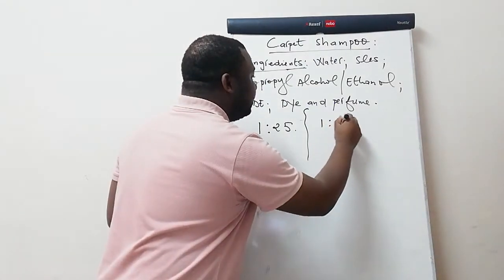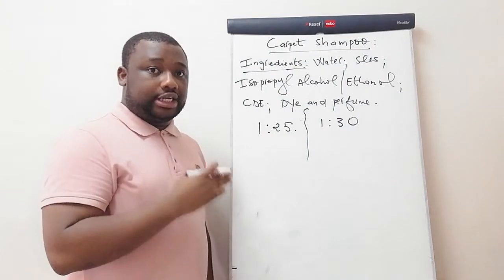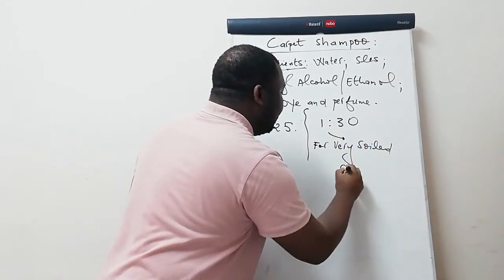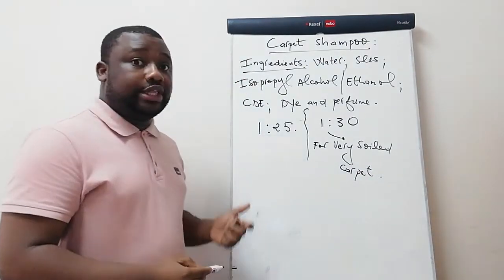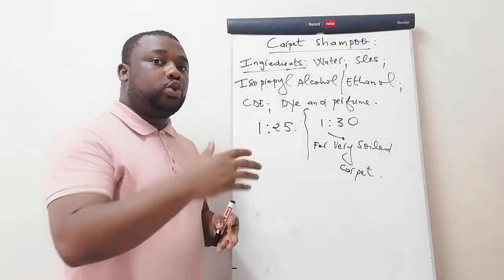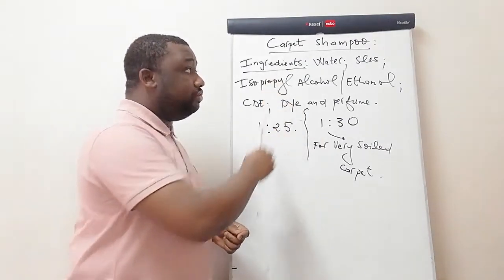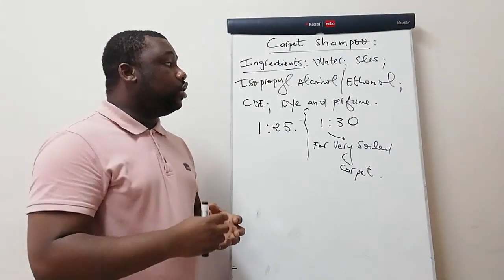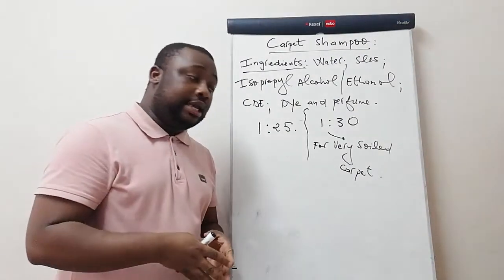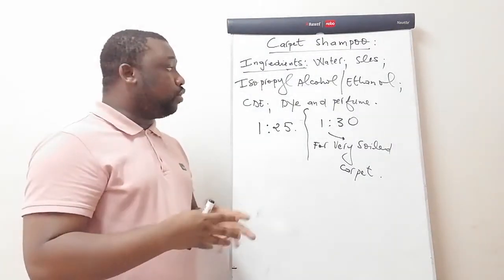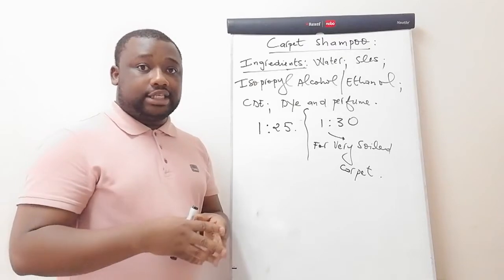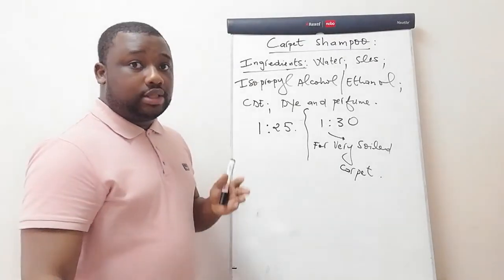We also have a ratio of 1 to 30, and this is for very solid carpet. If you're dealing with a solid carpet while using this product, you need to dilute your carpet shampoo to a ratio of 1 to 30 — meaning for every one liter of carpet shampoo, you mix it with another 30 liters of water. These are very important pieces of information, and if you intend to sell or trade this product, you can even put this on the sticker as guidance for your customers.